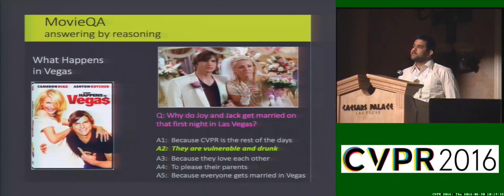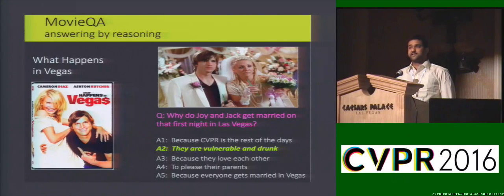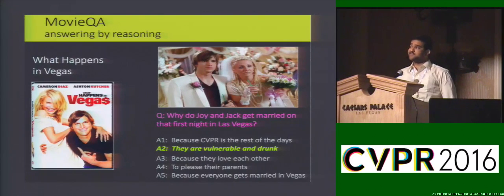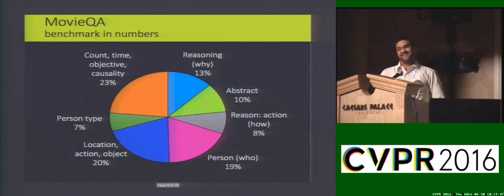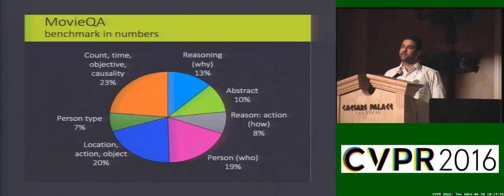Our dataset also consists of reasoning-based questions asking why and how certain events occur. In this example we see that Jack and Joy get married in Vegas because they are totally drunk. We hope you spent your time more wisely in Vegas. Almost 30% of the questions require reasoning and abstraction, and another 40% can be answered visually.